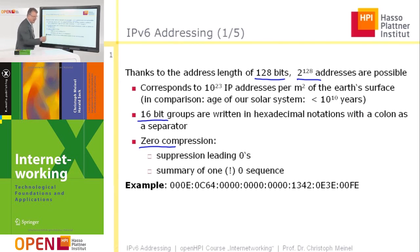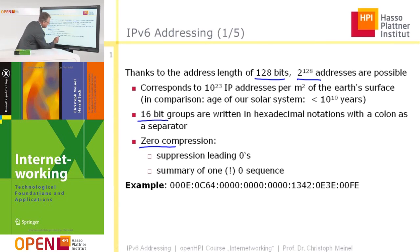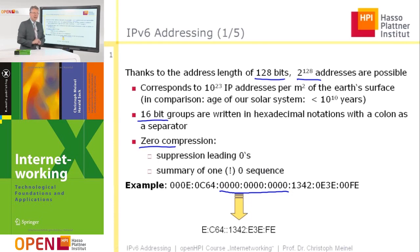For example, the letter E represents exactly the number 14 in hexadecimal. This is an exercise for you — please convert these groups into decimal notation to understand what they mean. The observation here is that there is a large sequence of blocks containing only zeros. The idea of zero compression is to omit these zero blocks. You can see that leading zeros are suppressed, so instead of 0,0,0,0,E we have only E.